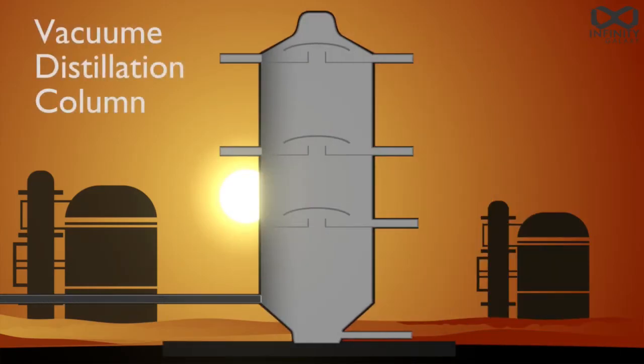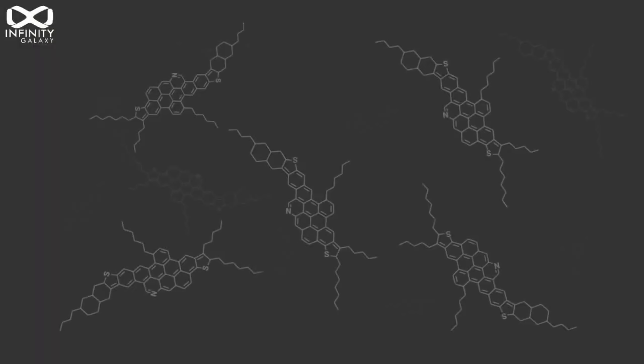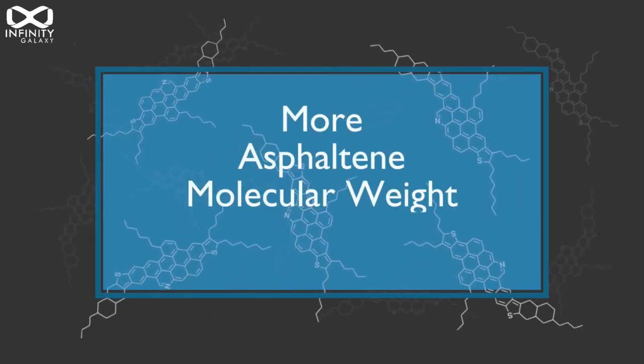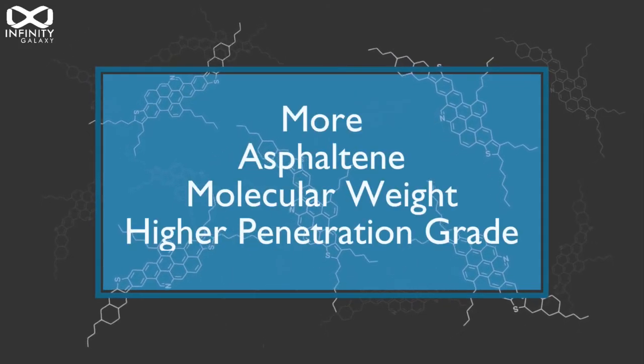In the final stage, the vacuum bottom is transferred to the vacuum distillation column to separate the lighter petroleum from the heavier one by blowing hot water steam into it. The outcome of this process is a type of bitumen which has more asphaltene and molecular weight with higher penetration grade.